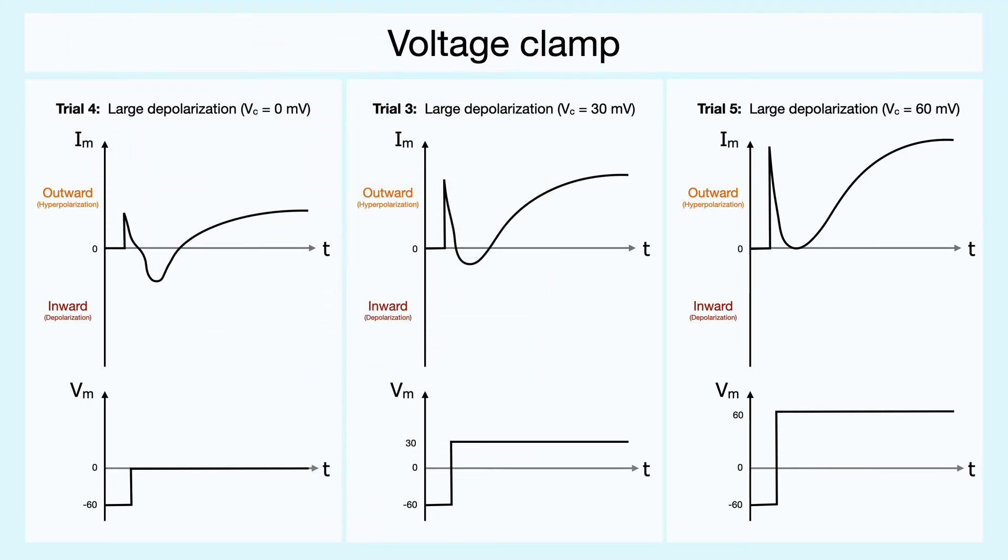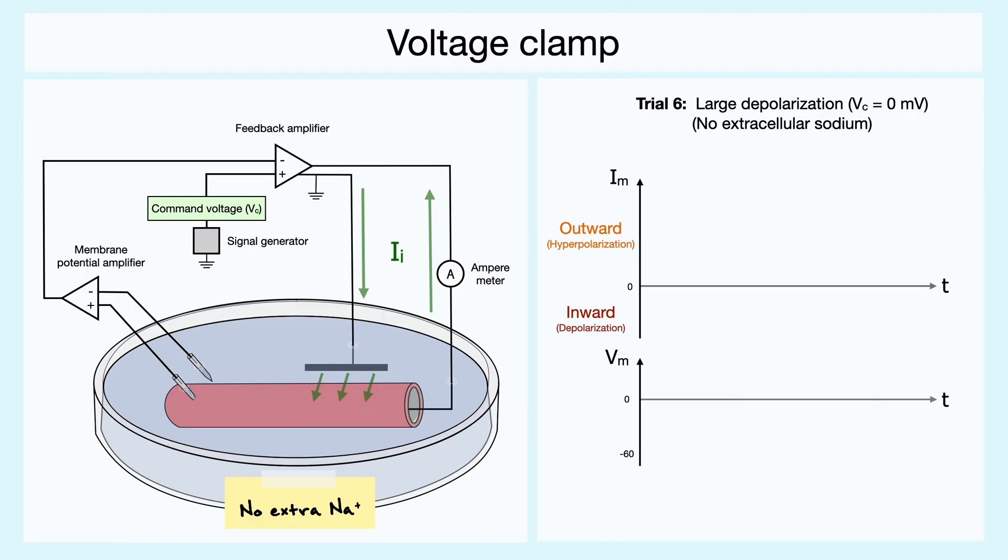Another line of evidence of sodium's involvement in the process comes from another experiment where the sodium is removed from the extracellular solution. The removal of sodium from the outside solution now makes the equilibrium potential for sodium very negative. Indeed, when the voltage is clamped, there is no early inward current, but rather an early outward current, which further proves that sodium is responsible for the inward current under physiological conditions.